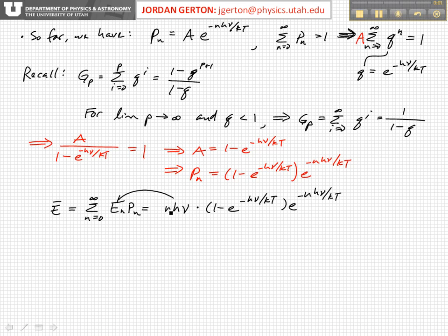So we have to multiply the energy in a particular mode by the probability that that mode will exist, as we derived up here. And then, of course, we have to sum over all modes, and that will give us the average energy in each mode.